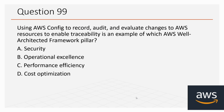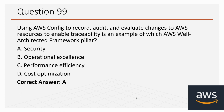Question number 99: Using AWS Config to record, audit, and evaluate changes to AWS resources to enable traceability is an example of which AWS Well-Architected Framework pillar? Options: A. Security, B. Operational Excellence, C. Performance Efficiency, D. Cost Optimization. The correct option is A, Security.